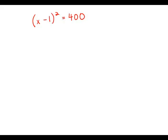If x minus 1 squared equals 400, which of the following could be the value of x minus 5?